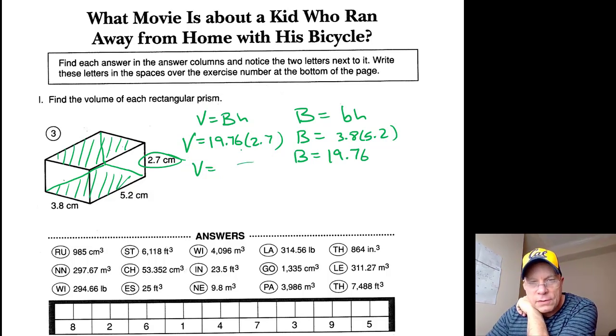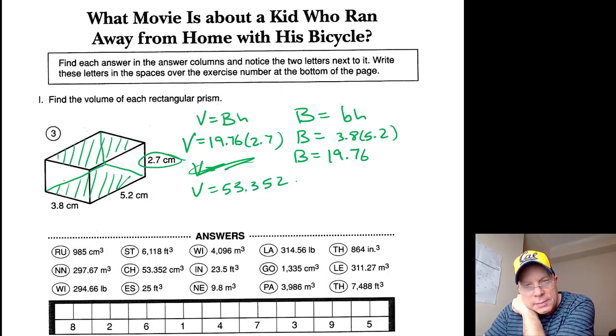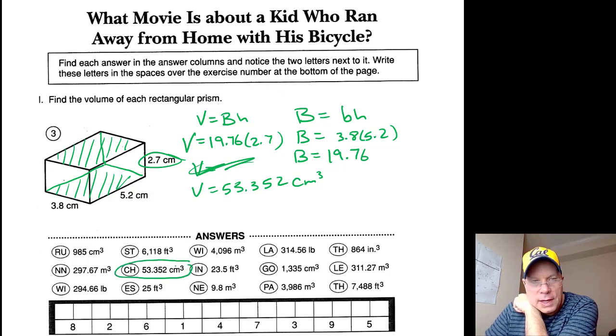And you multiply those, you get 53.352 centimeters cubed. See anything like that here? 53, exactly, right there, CH. So three is CH, one was TH.